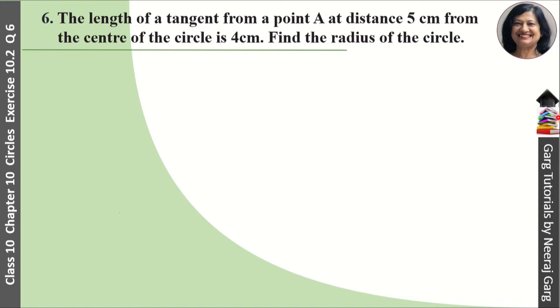Hi, this is Neeraj Garg and you are watching class 10th chapter 10 circles exercise 10.2 question number 6. The length of tangent from a point A at a distance 5 cm from the center of the circle is 4 cm. Find the radius of the circle.